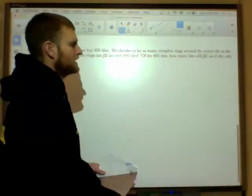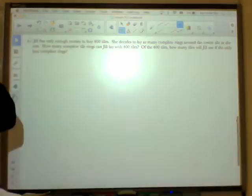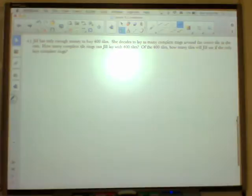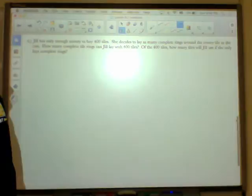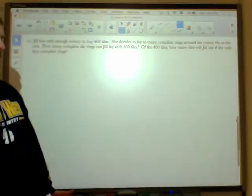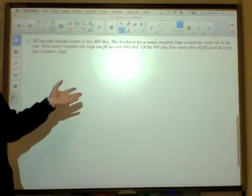And believe it or not, E is probably the one that you really need to pay attention to the most because this pops up on the homework. I don't think the one on the homework is difficult, but it does come up on the homework. So please pay attention here. It says Jill has only enough money to buy 400 tiles. She decides to lay as many complete rings around the center tile as she can. How many complete tile rings can Jill lay with the 400 tiles? Now, when you think about total number of tiles, you got to keep something in mind. You got a center tile. And now we're not talking about just one ring at a time. We're talking about a sum of rings. We got to figure out how many with that center tile and then how many rings can we add up on there before we get, or we cannot exceed 400 tiles. That's the key.